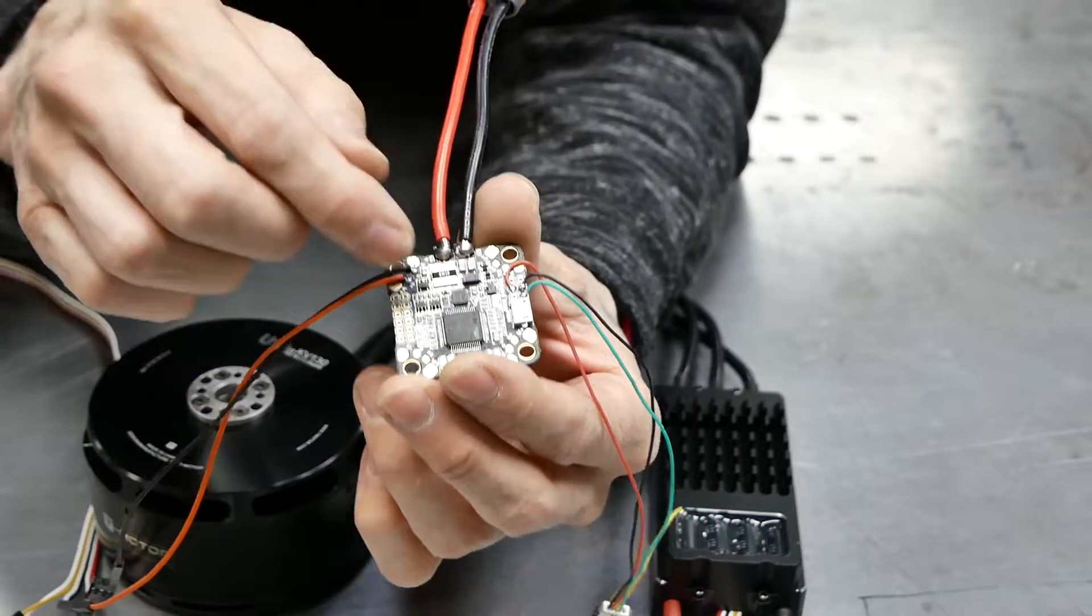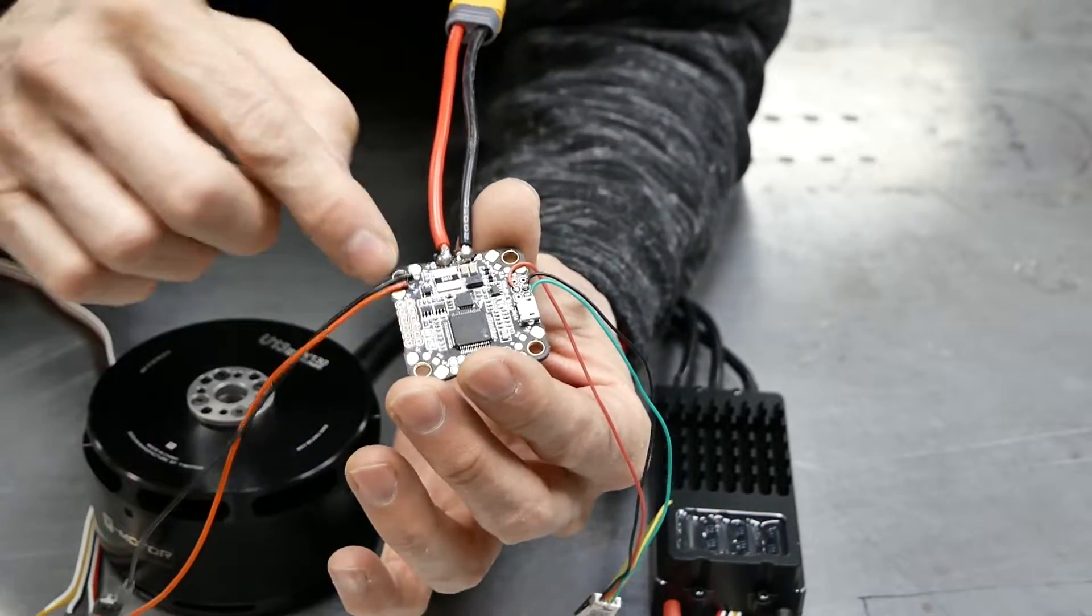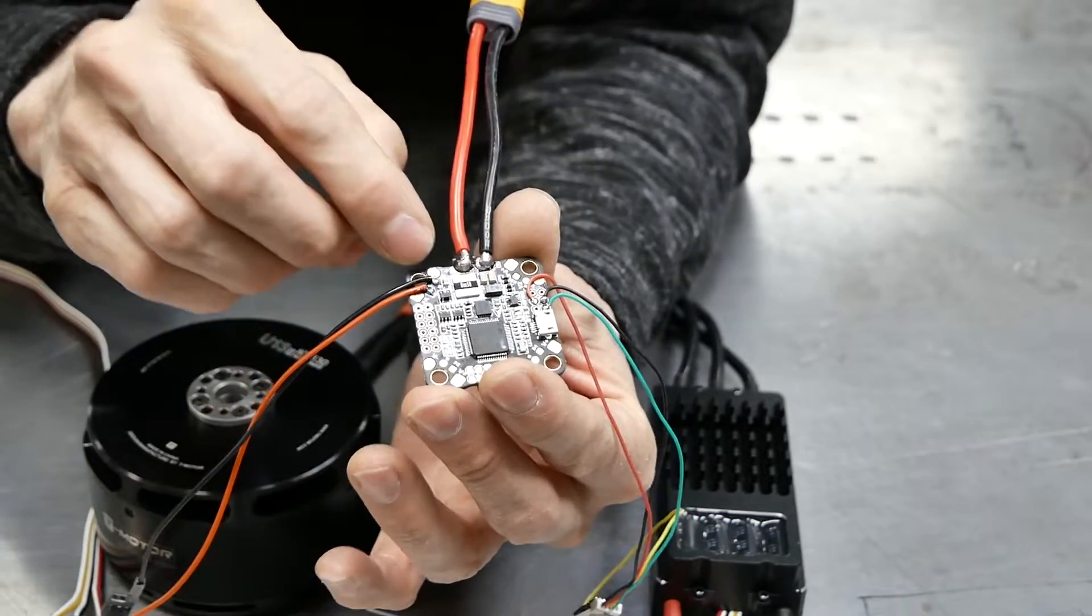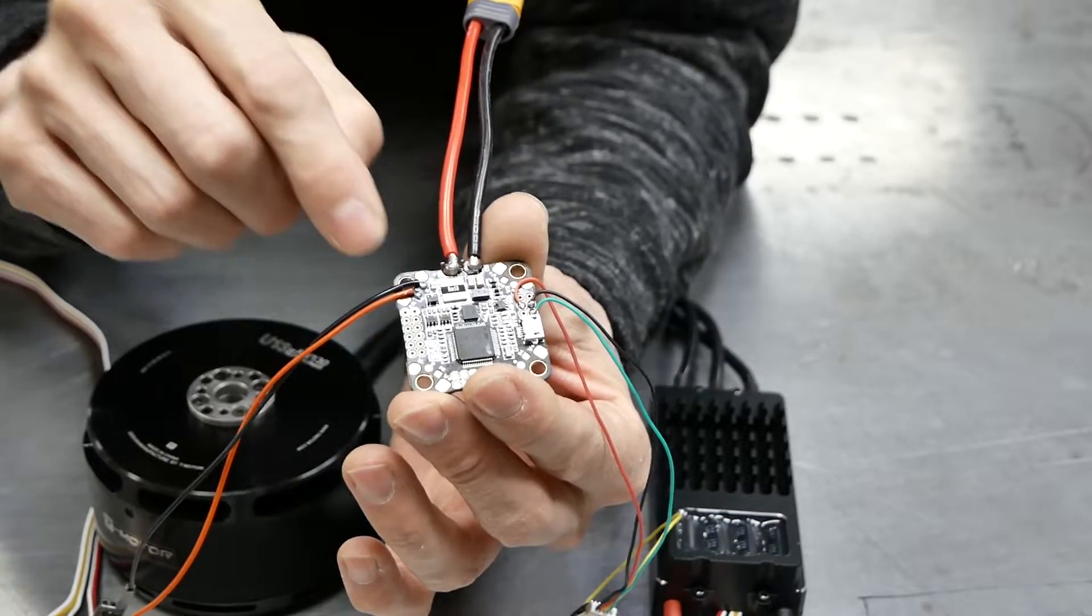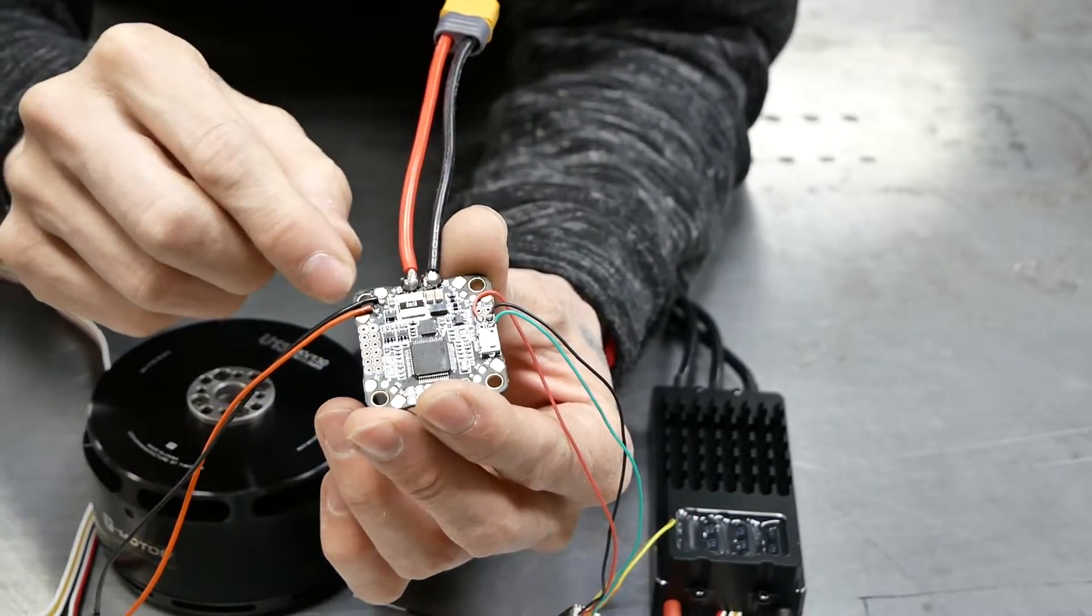If your flight control board, this DYS flight control board does actually have a ground pad here, but the CL Racing and some of the other ones out there don't actually have ground pads for the signal wire. So go ahead and just stuff it in wherever you can find an available ground.